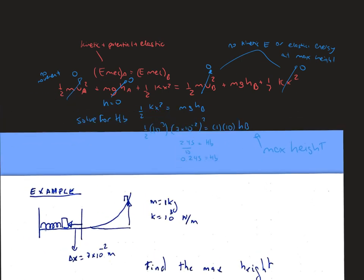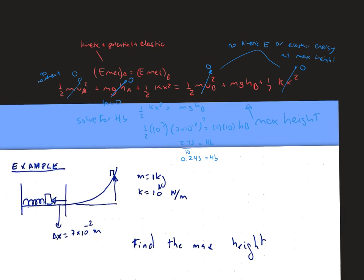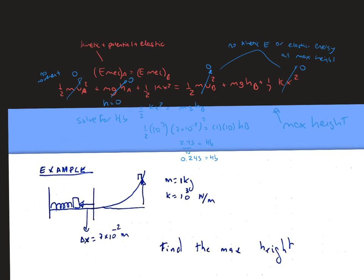So in this example we're going to find the maximum height. The given values are m equals 1 kilogram, k equals 10³ newtons per meter, and delta x equals 7 times 10⁻² meters.